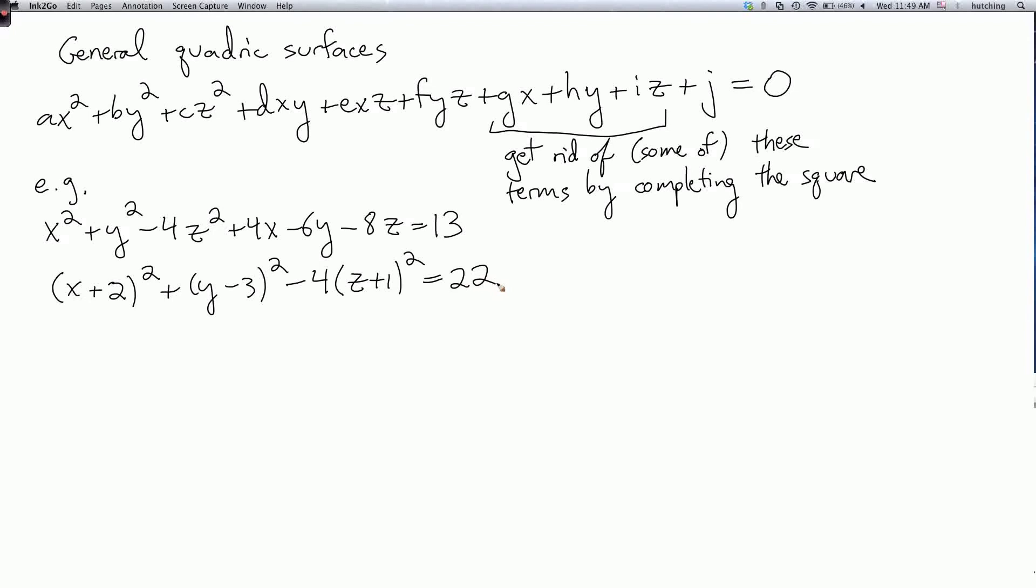So what surface is this? Well, let's introduce some new variables. Let's let x bar equals x plus 2, let's let y bar equal y minus 3, and z bar equals z plus 1. Then our equation turns into x bar squared plus y bar squared minus 4z bar squared equals 22.